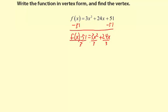I'm going to recopy the left and simplify the right a little bit. So f of x minus 51 divided by 3 equals x squared plus 8x.